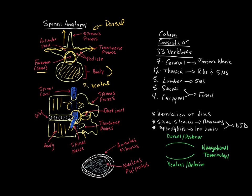Let's look at the disc. The intervertebral disc has two general components. You have an outer, tough, fibrous capsule — known as the annulus fibrosus — and then a thinner, more gelatinous, squishy interior known as the nucleus pulposus. A very common injury is where you get a tear of the annulus and then the nucleus pulposus herniates out through that tear — that is known as a herniated disc.